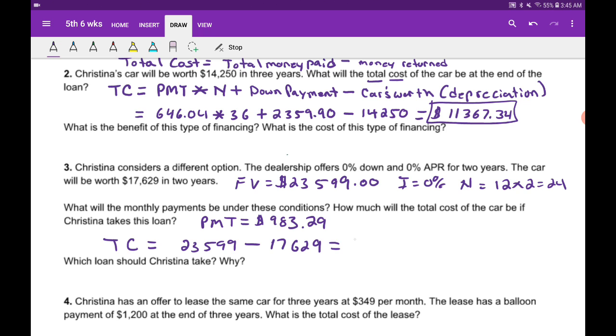This loan is going to end up costing us $5,970, almost $6,000. So much cheaper as a total cost to us than the other loan option where we put a down payment and did it for three years. That extra year with interest cost us some money: $11,000 versus $6,000.